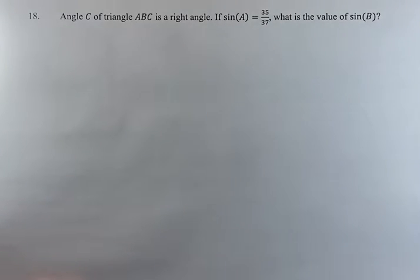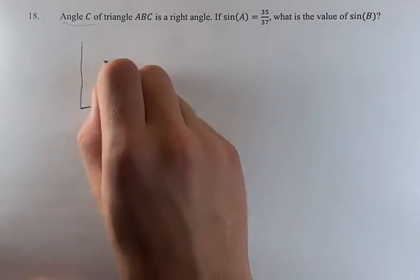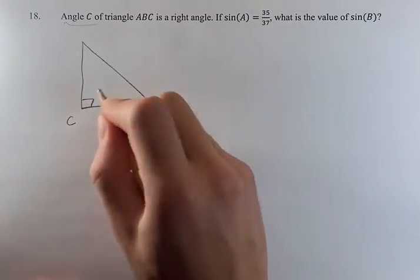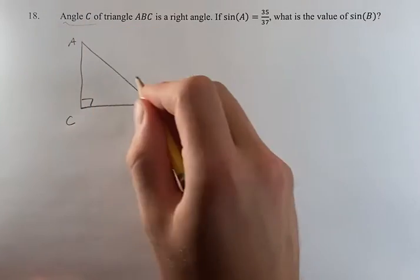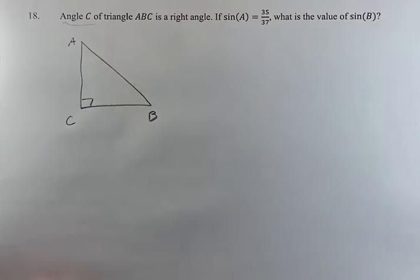Hello and welcome back to another video. We're given in this problem that angle C of triangle ABC is a right angle. If we just mark that right there, we can have a quick drawing of the triangle.